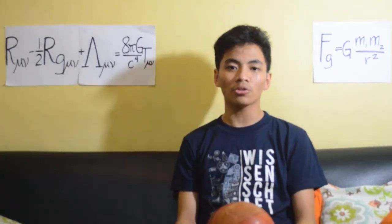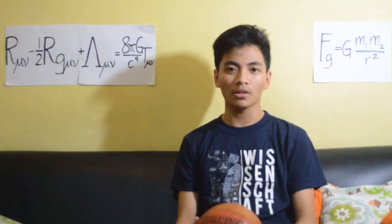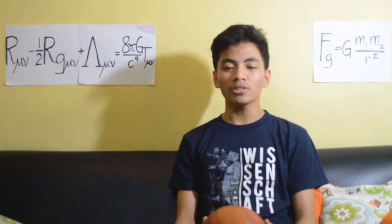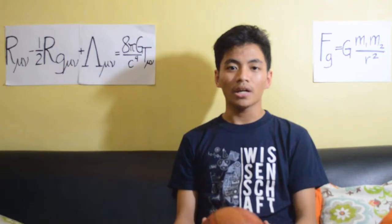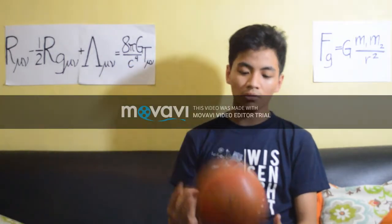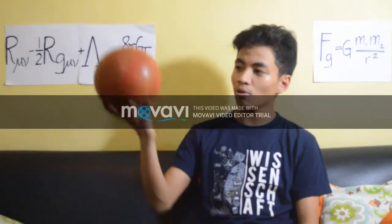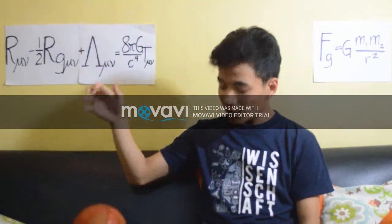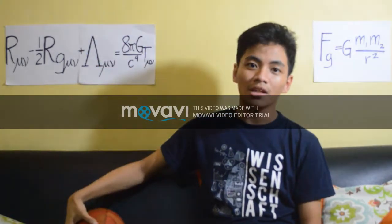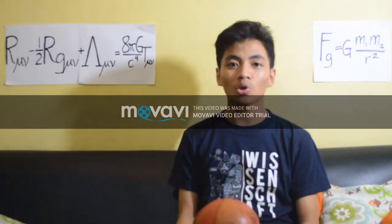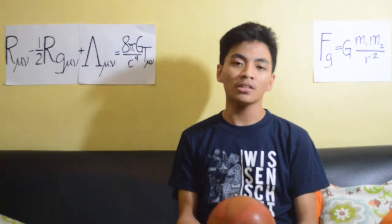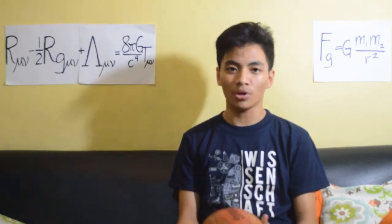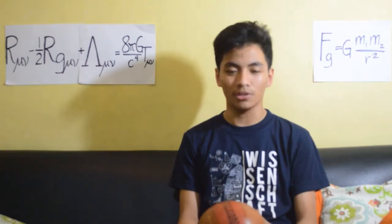Let's talk about Newton's theory of gravity. What is gravity for Newton? Newton said that gravity is a force — it is something that pulls objects down, just like this ball. If I let go of this ball in mid-air, it will automatically fall down towards the Earth, following a path radially inward towards the center of the Earth.